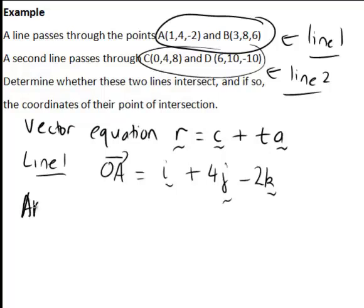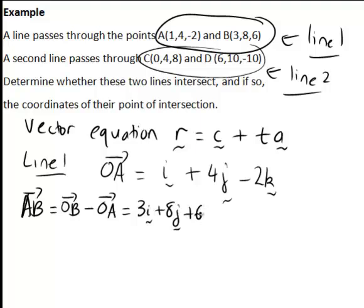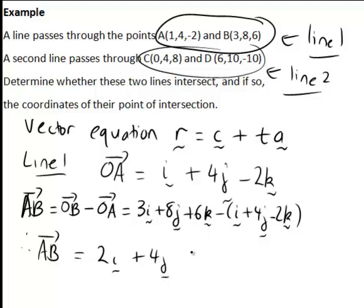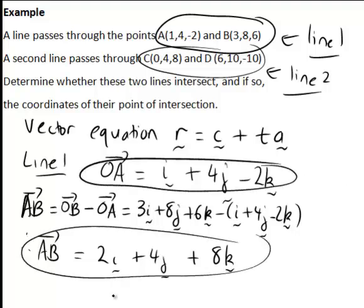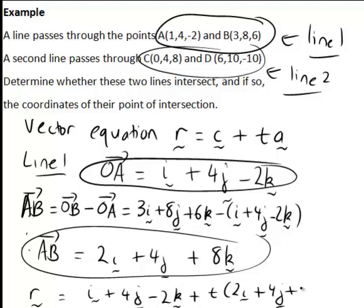The vector AB will be in the direction of this line, and that's worked out as the position vector OB minus position vector OA, which in this case will be 3i plus 8j plus 6k minus i plus 4j minus 2k. Hence the vector in the direction of line AB is 2i plus 4j plus 8k. Putting those two pieces of information together, the equation of line 1 is R equals i plus 4j minus 2k plus t times 2i plus 4j plus 8k.